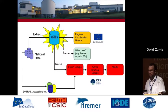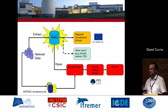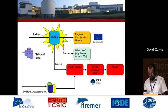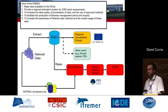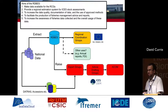What we're proposing is to replace the existing regional database with the regional database and estimation system, and remove Intercatch from the scene completely. Data still goes through the RDB-ES to the regional coordination groups, but instead of stock assessment data going through Intercatch, it's now raised directly from the RDB-ES. The aims are to make data available for RCGs, provide a regional estimation system for ICES stock assessments, increase data quality documentation, use approved methods, and facilitate production of fisheries management reports.